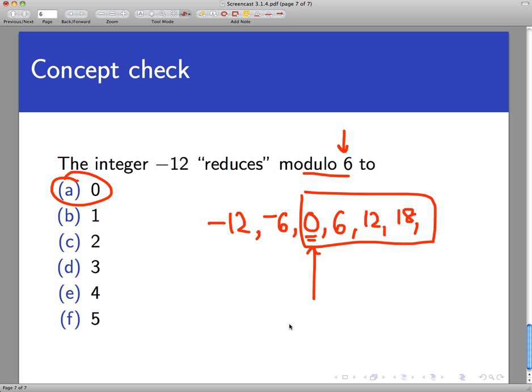So this idea of reducing an integer to its least non-negative residue modulo n actually helps out in a number of different ways. Again, this isn't really touched upon in your book, but I think it's important to bring it up. So thanks for watching.